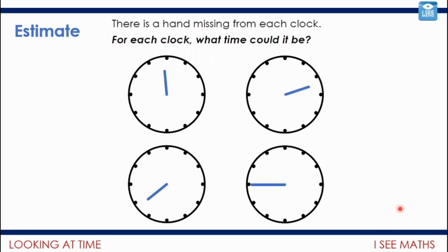So there's a hand missing from each clock. For each clock, what time could it be? And there's a trick question. I wonder if you can find it. Pause the video and have a go. If you're ready, let's have a look. I thought that first one, maybe it could be 11:55. It's not quite 12 o'clock yet. So it's got to be 11 something, but it's very close. I thought this one maybe 20 past two, because I know it would be two o'clock there. It's not quite half two. I thought about 20 past looks about right.